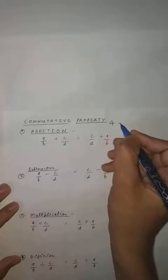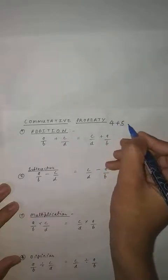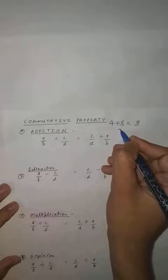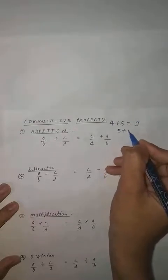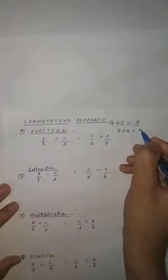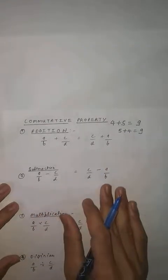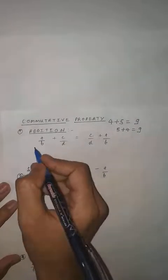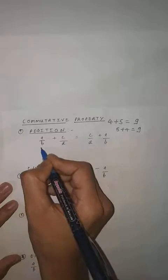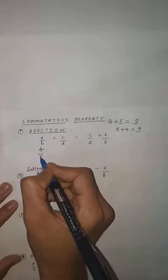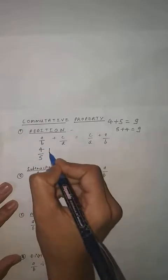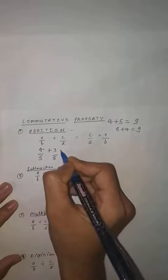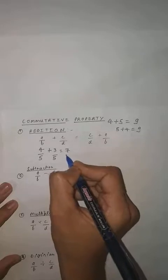Just say if you are writing 4 plus 5, this gives 9, and if you are writing 5 plus 4, this also gives 9. So we will check in rational number whether this property exists or not. Let A by B equal to 4 by 5 and C by D equal to 3 by 5. So what will it give? It will give 7 by 5.